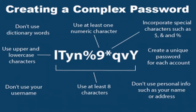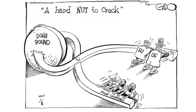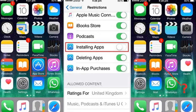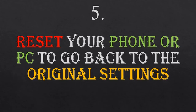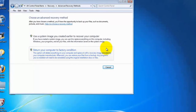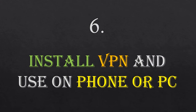Number four: delete all apps that you didn't install — delete everything suspicious from your phone or PC. Number five: reset your phone or PC back to its factory settings or original settings.